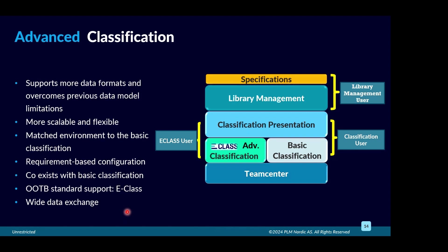You also have out-of-the-box support for e-class, which is the only industry standard for classification. It has been developed over many years, and Siemens is one of the companies supporting it. E-class exists because every company can define their products differently, causing problems when exchanging product information, buying from, or supplying each other — the classification data formats and attributes may not match.